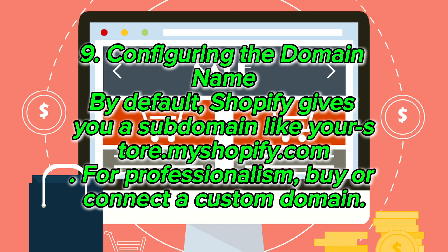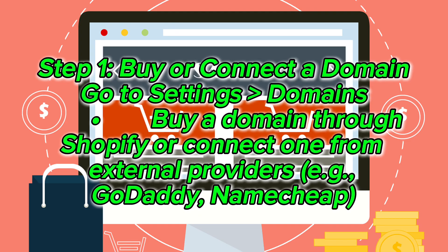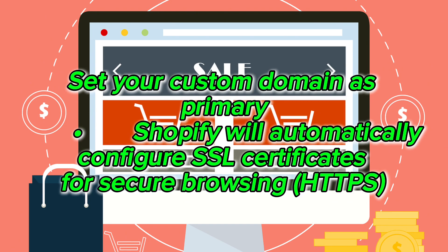Configuring the domain name: By default, Shopify gives you a subdomain like yourstore.myshopify.com. For professionalism, buy or connect a custom domain. Go to Settings > Domains to buy a domain through Shopify or connect one from external providers like GoDaddy or Namecheap. Set your custom domain as primary — Shopify will automatically configure SSL certificates for secure browsing (HTTPS).